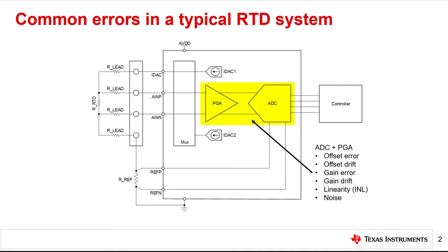The ADC and amplifier can contribute multiple types of error. In this image, the amplifier is integrated into the ADC package, but the same error analysis applies for a discrete amplifier. In either case, the amplifier and ADC can contribute offset and gain error, linearity errors, and drift errors. While both components can also contribute noise, this topic is not discussed further in this presentation. Refer to the Precision Labs series on ADC noise for a detailed noise analysis.